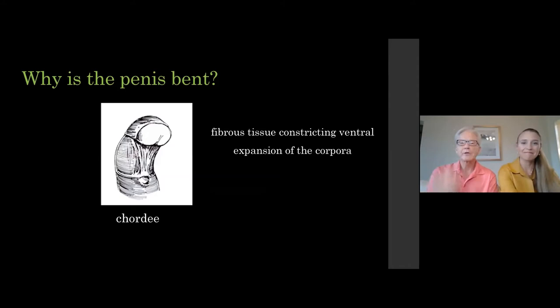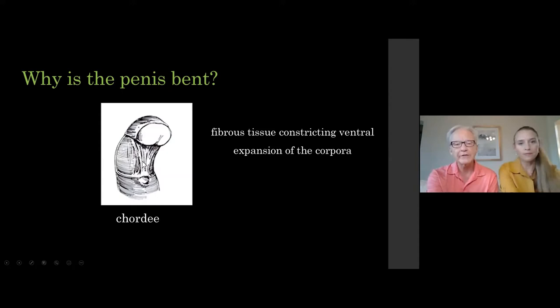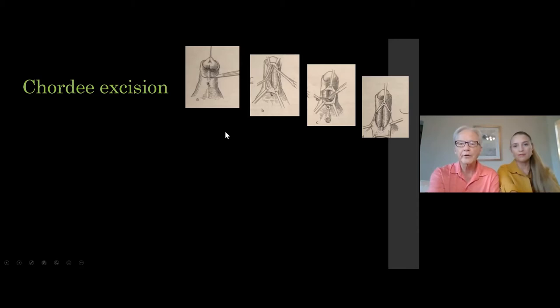Why is the penis bent? If we could hear you, I suspect all of you would say there's chordee. What is chordee? The classical depiction is a fibrous band on the surface of the corpora, outside the tunica albuginea, constricting it so that with an erection the ventral aspect can't stretch. If that's what's causing curvature, the correction is to cut that away — chordee excision. This is a very old concept going back to the beginning of hypospadias surgery.